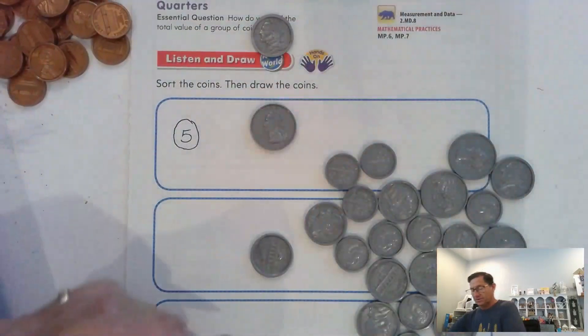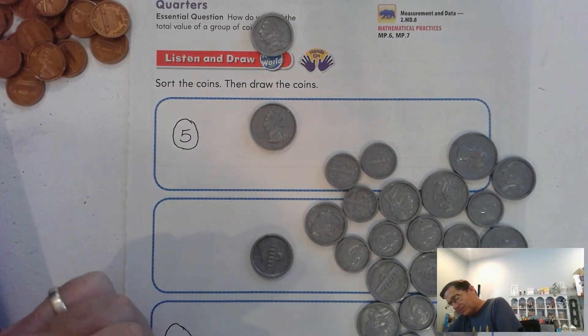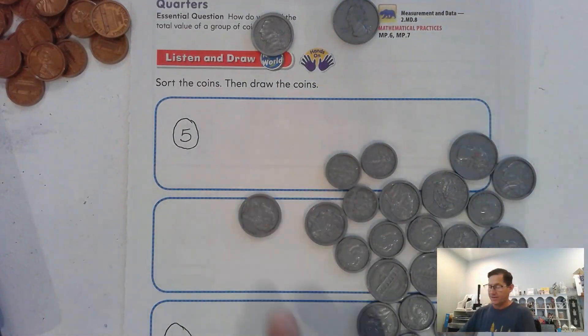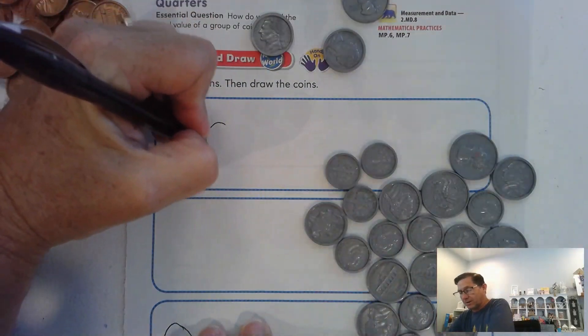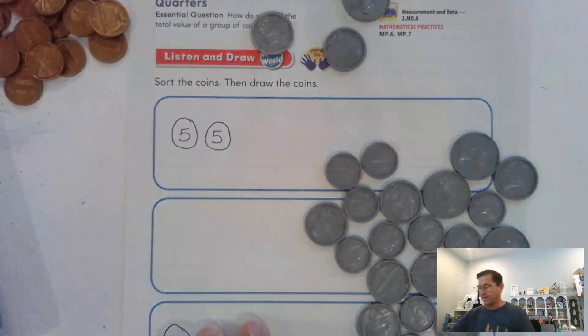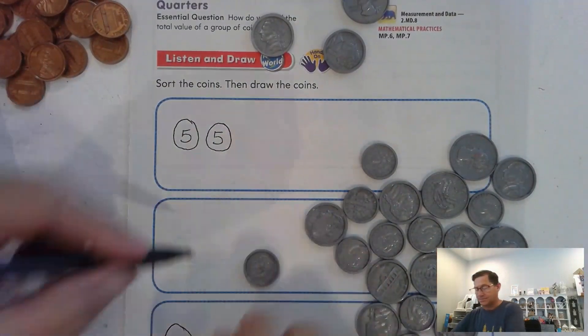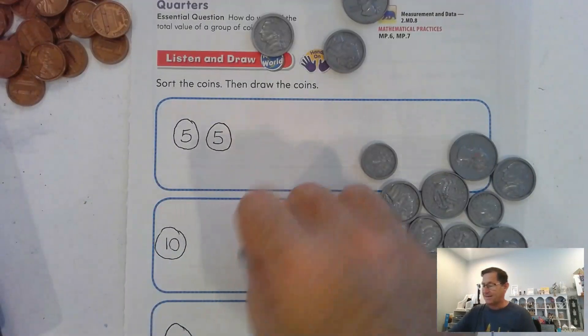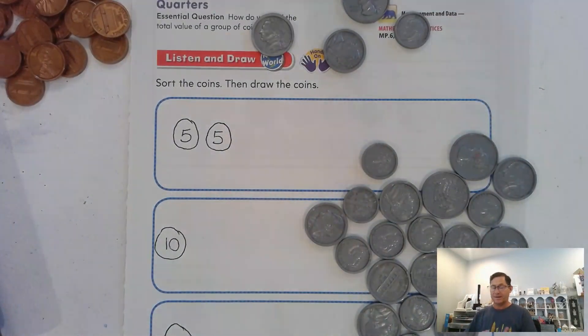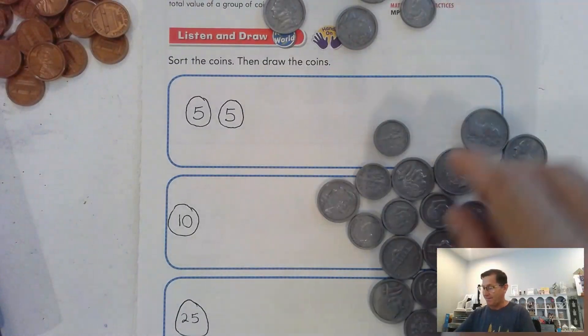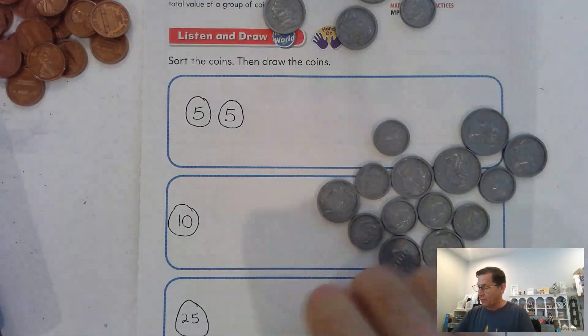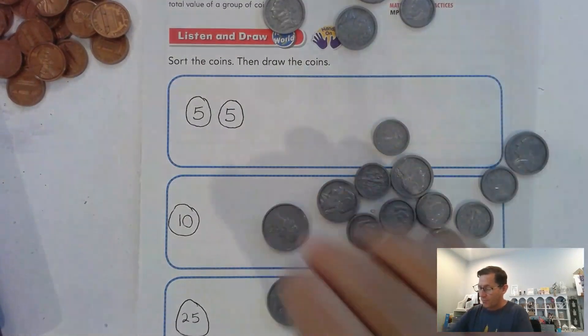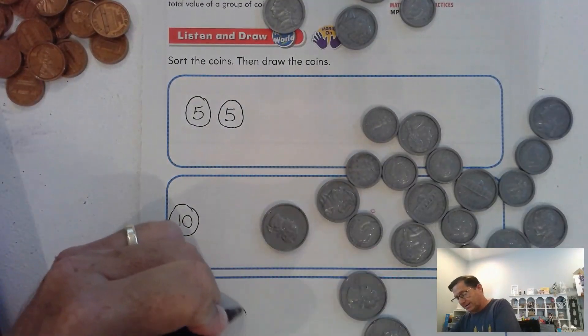This is a quarter. Put that in the last box, and that's worth 25 cents. Here we have another nickel, write another nickel. Here we have a dime, it's the smallest of the three coins, and write 10 cents in it. So basically we're just sorting the coins that we have.